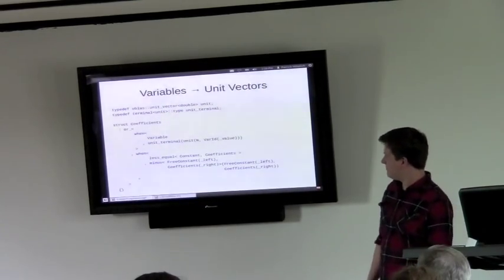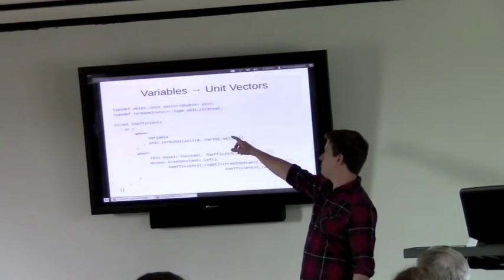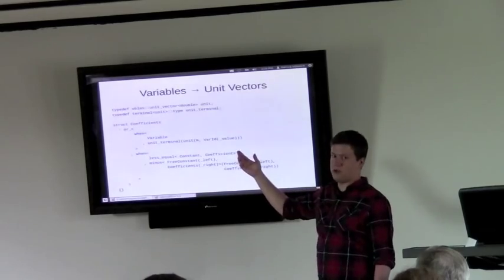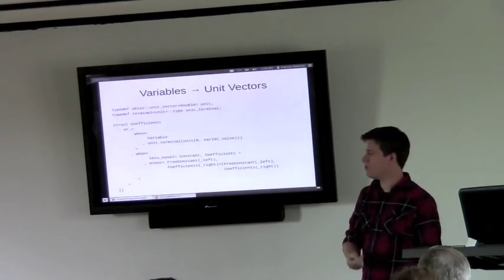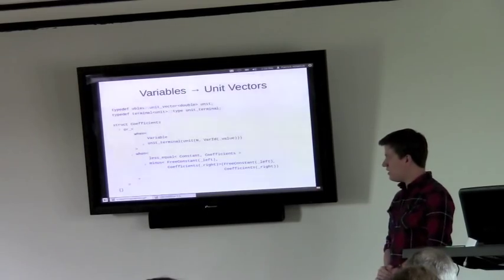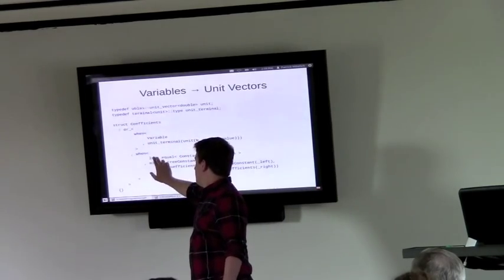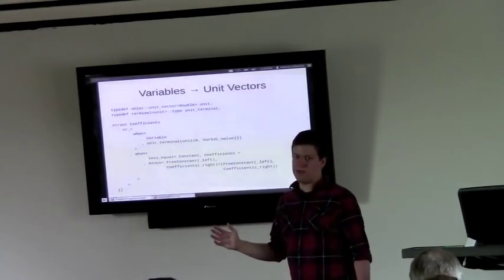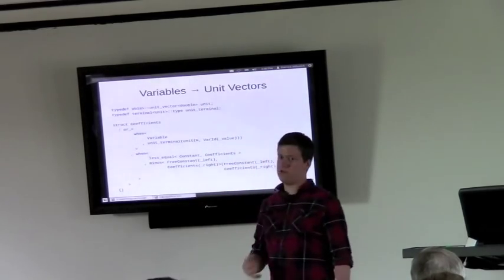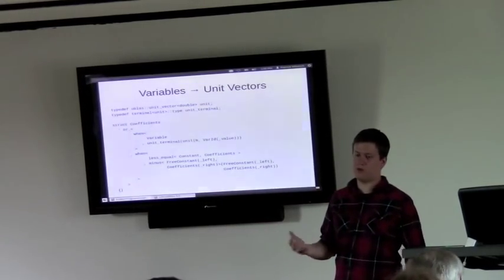So now we start to have some fun. So we'll define a couple of types up here. We have the uBLAS unit vector, and we wrap that into a terminal type so that we can hang it into a proto-expression tree. And then we define this transform called coefficients. And a transform is very similar to a grammar. If you look at these when statements, the first argument of that basically defines a grammar.